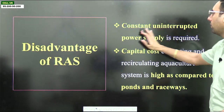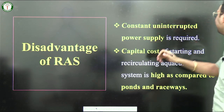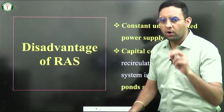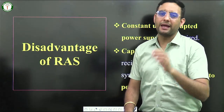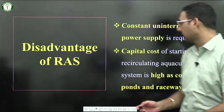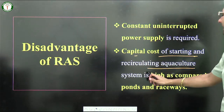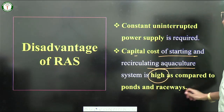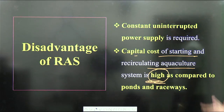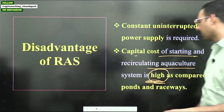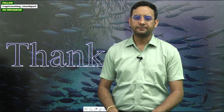Disadvantages of RAS: first, constant uninterrupted power supply is required — as with all intensive fisheries, power must be available at all times to supply air to the water. Second and most major, the capital cost of starting a recirculating aquaculture system is very high compared to ponds and raceways, which is why RAS is less popular than biofloc among farmers.